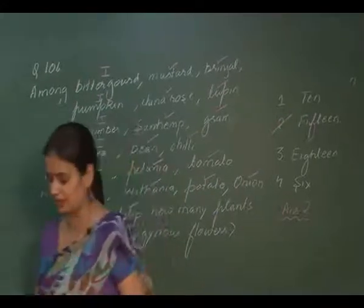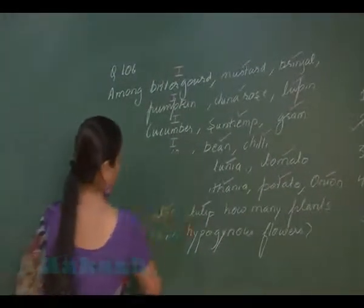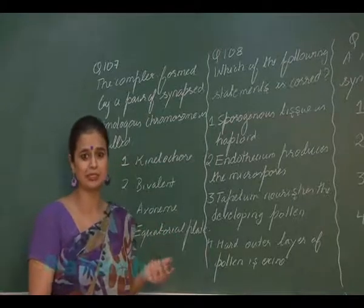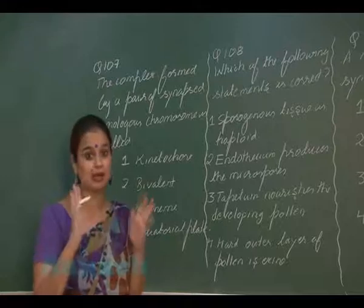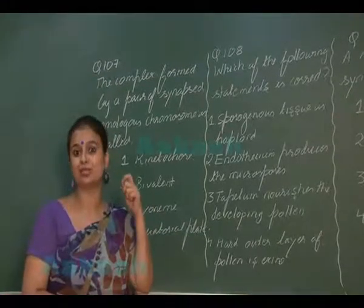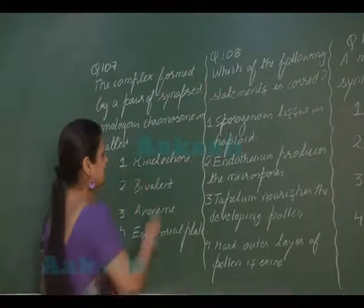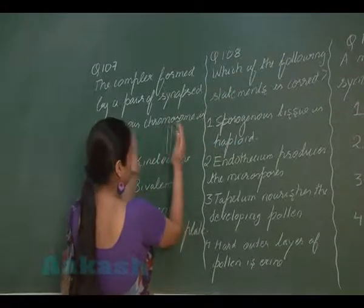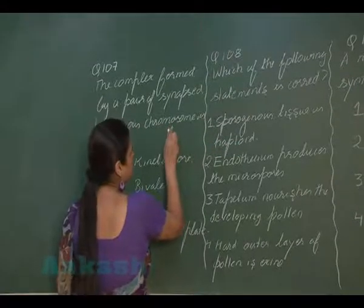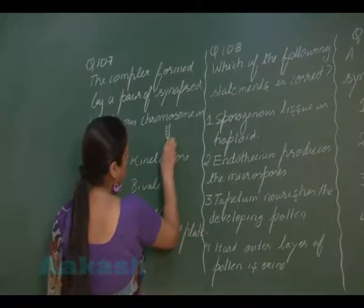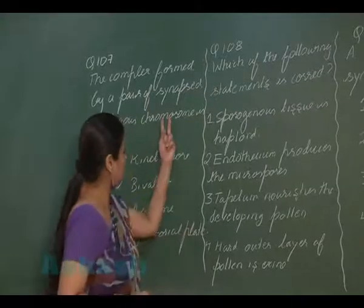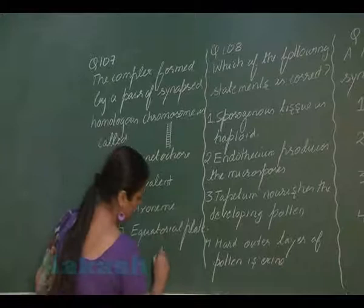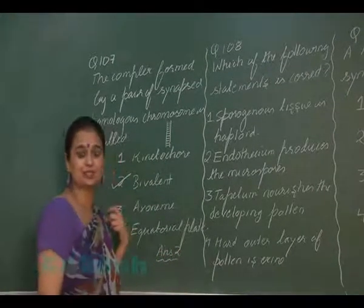Let us proceed to question 107, which talks about synapsis. Synapsis is when homologous chromosomes show pairing. This occurs during meiosis, in prophase 1 at the zygotene stage. The pairing is assisted by a complex formed between them, known as the synaptonemal complex. This paired structure is known as a bivalent. So the right answer here is option 2 — pairing results in the formation of the bivalent.